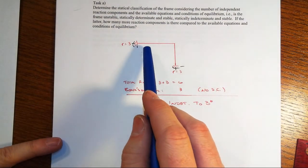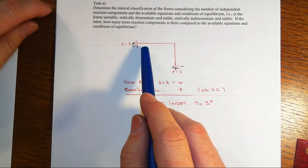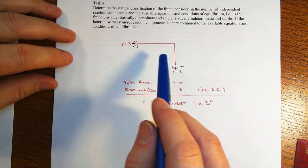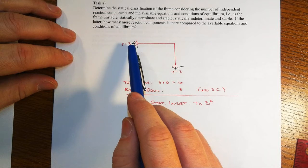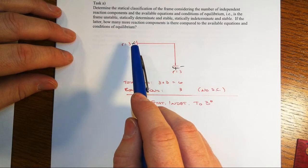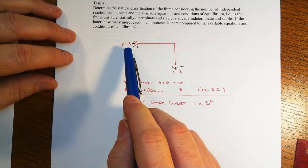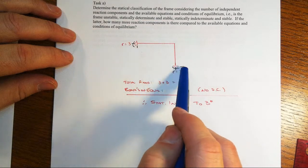One, let's just from a static equilibrium perspective, we've got this fixed end at the left, fixed end at the lower right. That's one, two, three reaction components, vertical, horizontal, and the moment at both ends.